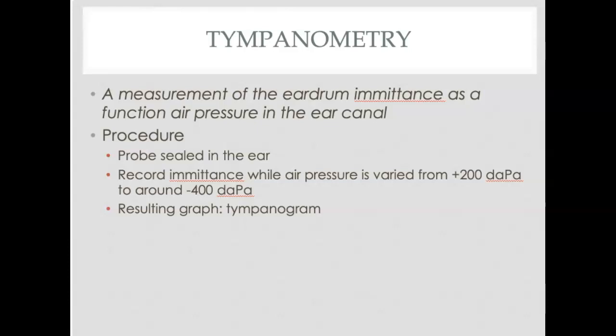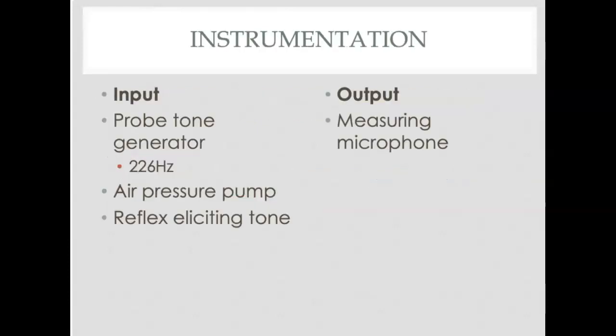What we do is we put the probe in the ear, and it's sealed and has to be sealed so we can maintain the air pressure. Then we record this admittance from plus 200 to minus 400 decapascals as that unit of measure, and the resulting graph is called a tympanogram.